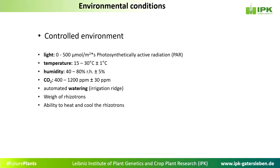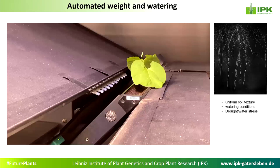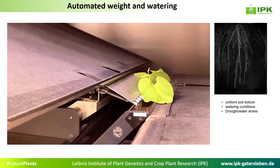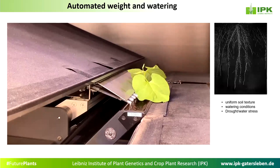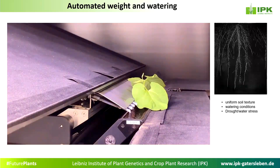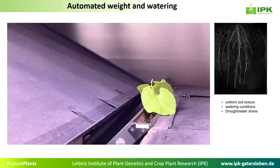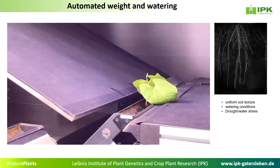Here is a short video showing how irrigation is performed. The risotrons are directly watered inside the towers. Water is applied and photos are taken. What is really important for detecting roots is a uniform soil texture and uniform watering conditions — and we can thereby also apply drought and water stress.